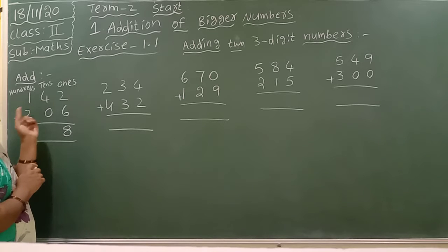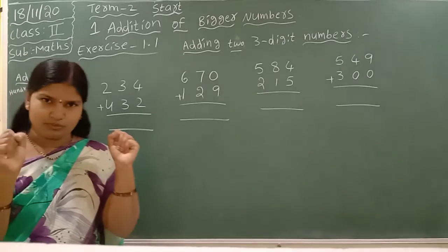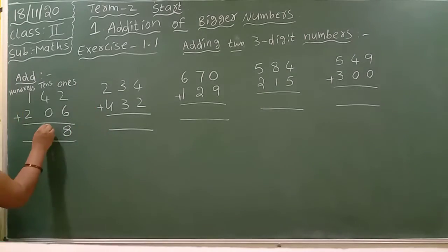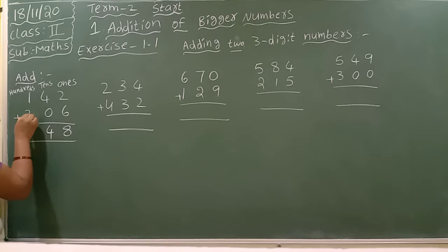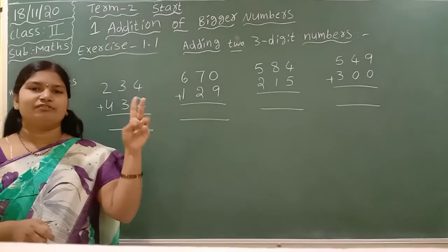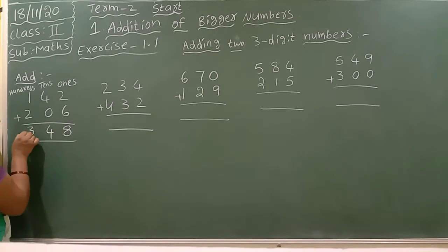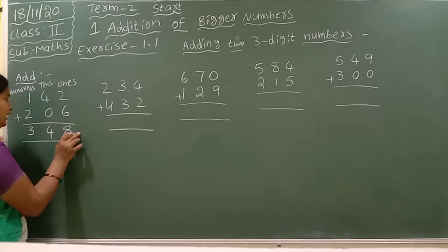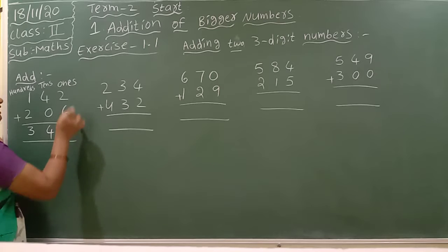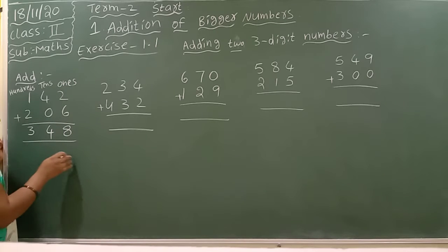Next: 4 plus 0. 4 in the mind, take 0 — means nothing. So 4 plus 0, the answer is 4 only. Next: 1 plus 2. 1 in the mind, take 2 fingers — 1, then 2, 3. The answer is 348. 3 is in the 100s place, 4 is in the 10s place, 8 is in the 1s place. So we read it as 348.